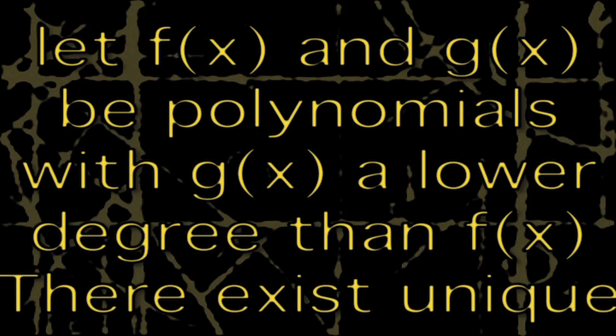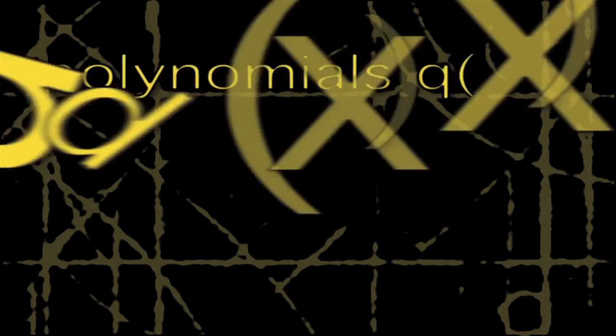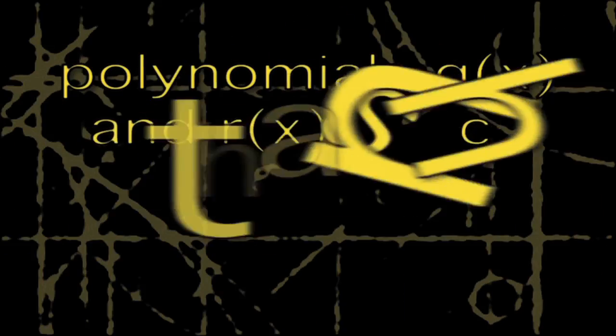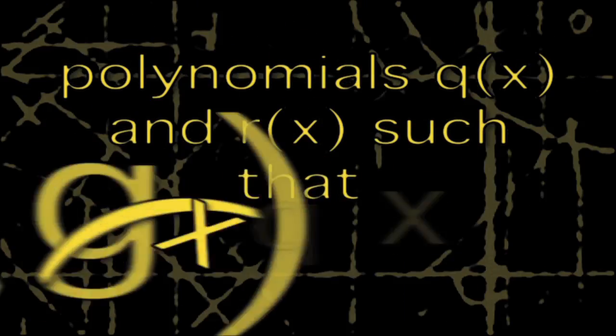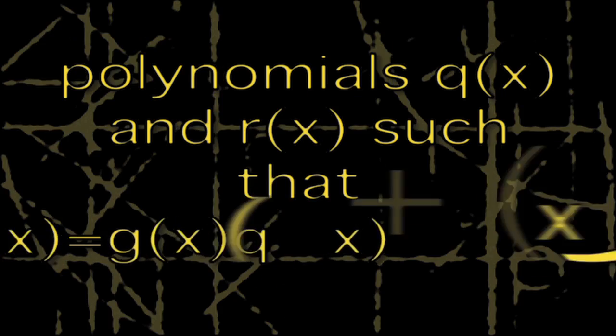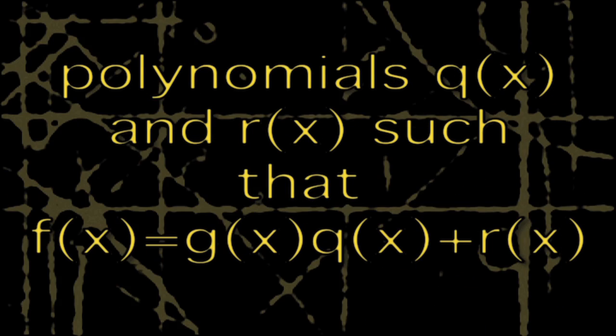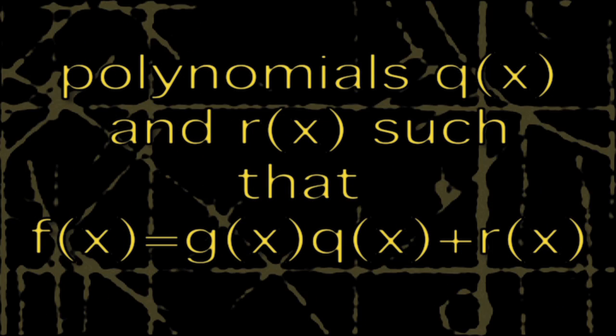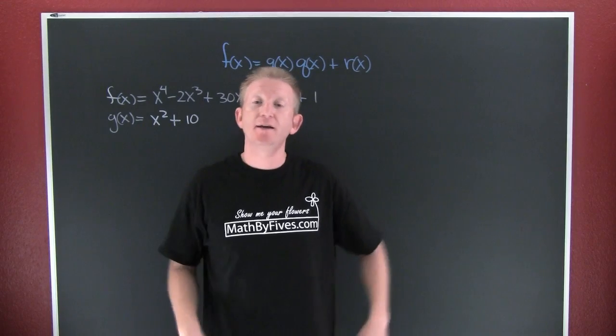There exists a unique polynomials q(x) and r(x) such that f(x) is the product of g(x) and q(x) with remainder r(x).